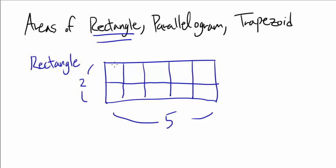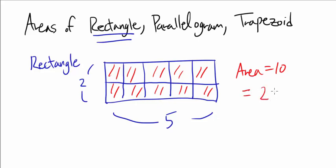Area is just how many blocks you can fit in. So we have 1, 2, 3, 4, 5, 6, 7, 8, 9, 10. Since we have 10 blocks, the area is 10. And we can also find this 10 by doing 2 times 5, or length times width, or height times width. So that's how you find the area of a rectangle.